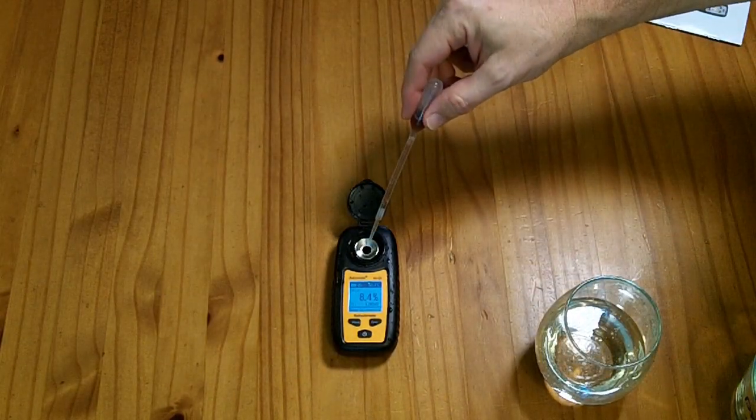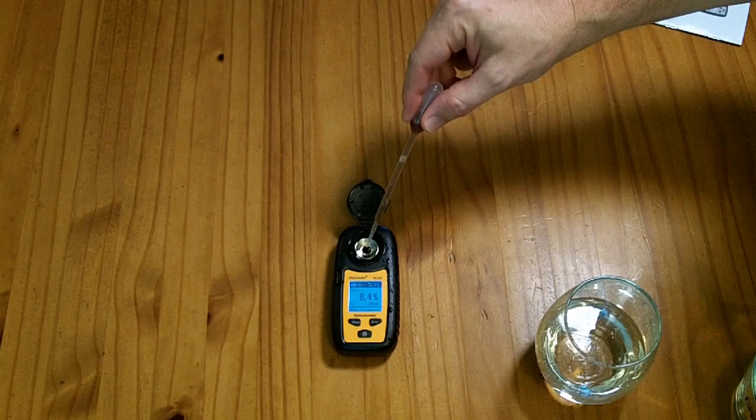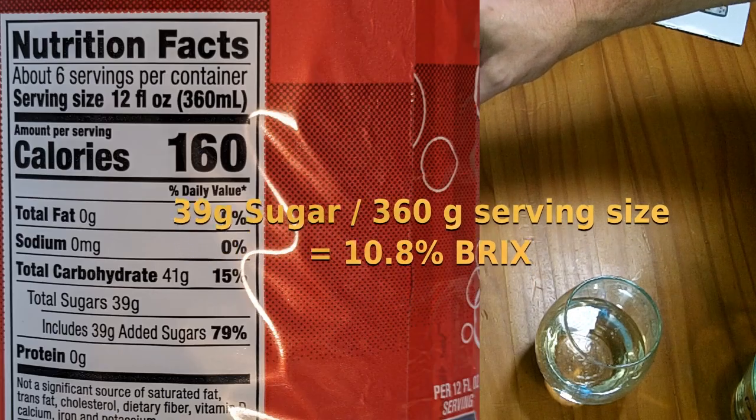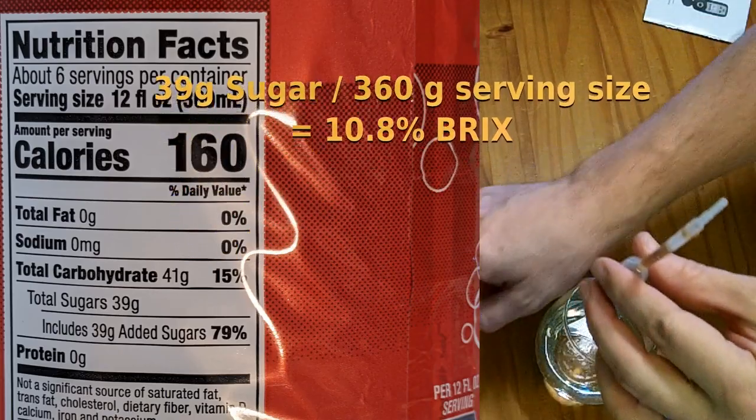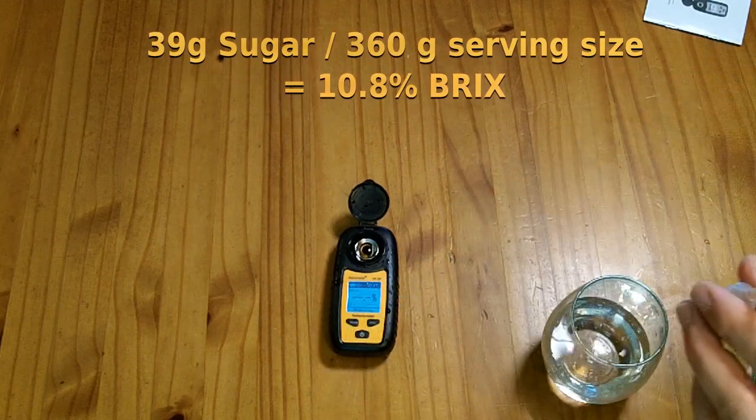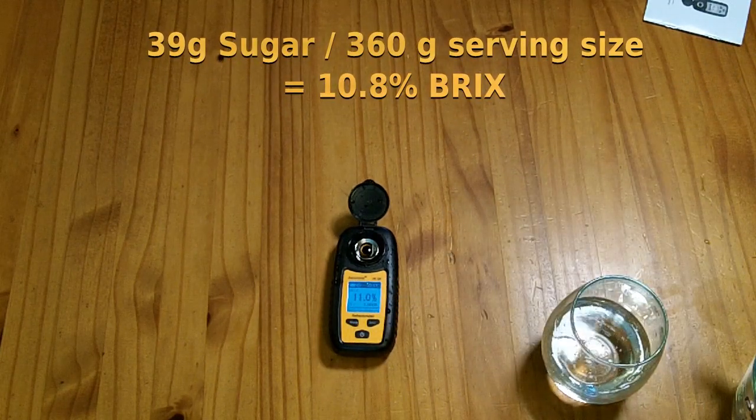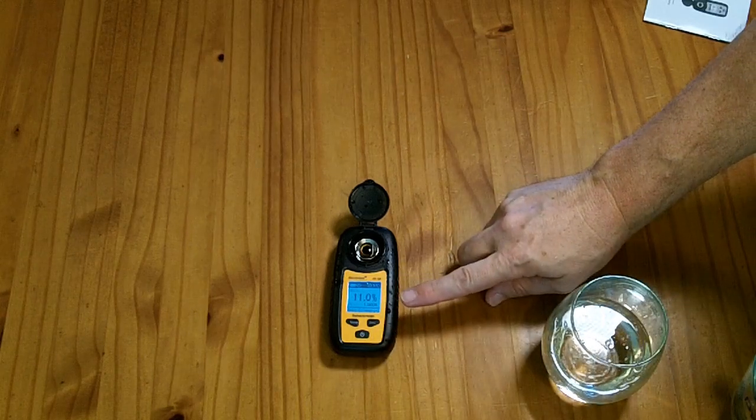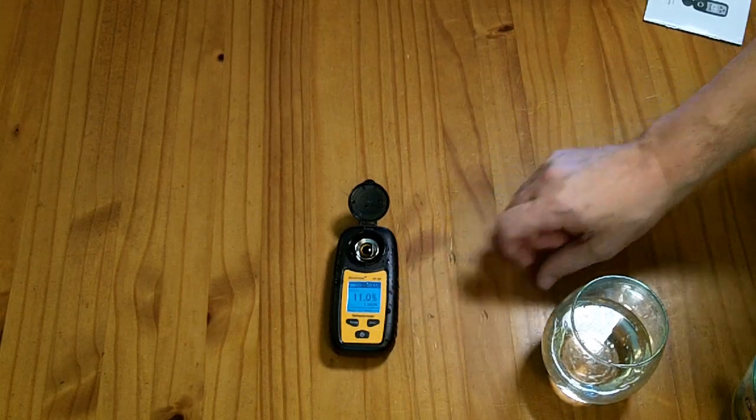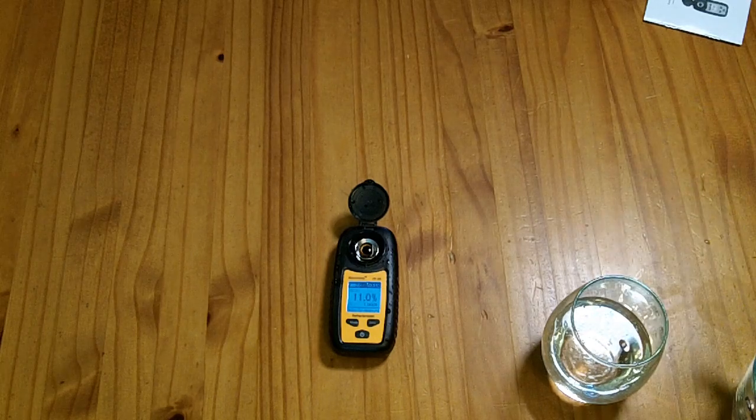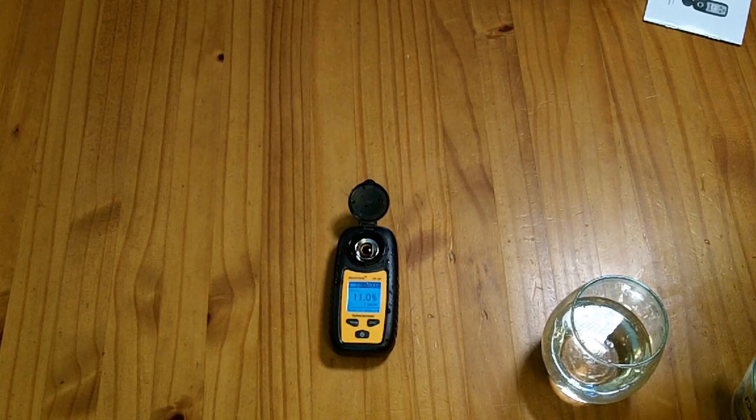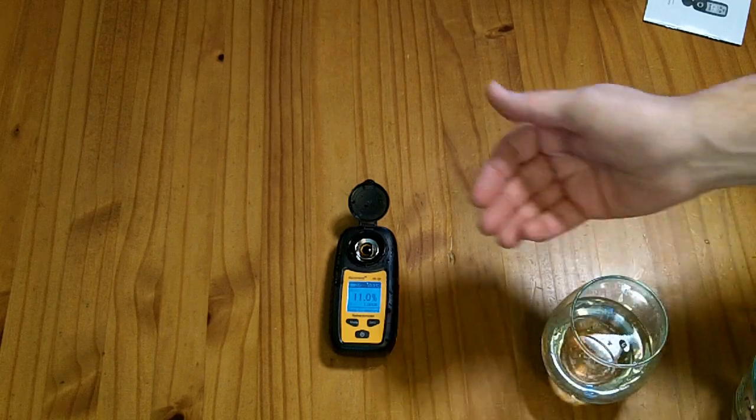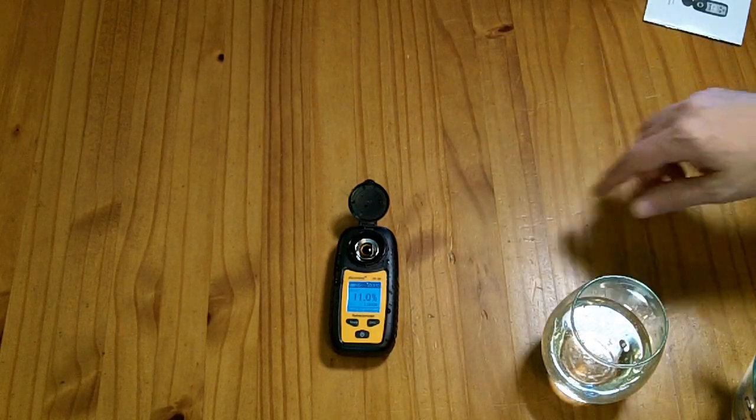This is the full-sugar soda, and according to the nutrition label... Well, it's actually reading 11%. Now, that higher reading could be because there's other solids dissolved in the soda, or it could be they just have a little bit more sugar than the nutritional label says, or it could be that the meter is off by just a little bit.